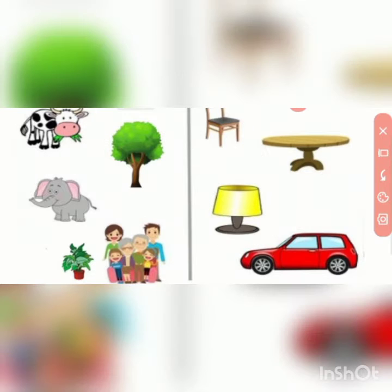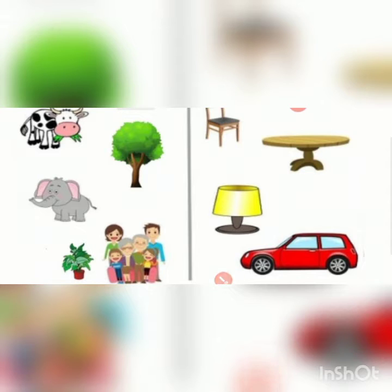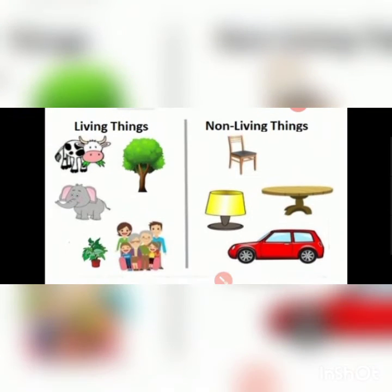Now when you look here, you can see that I have divided them into groups. Can you tell me how I have divided them into groups? On what basis I have divided them into groups? Living things and non-living things. You have studied about living things and non-living things last year itself, right?